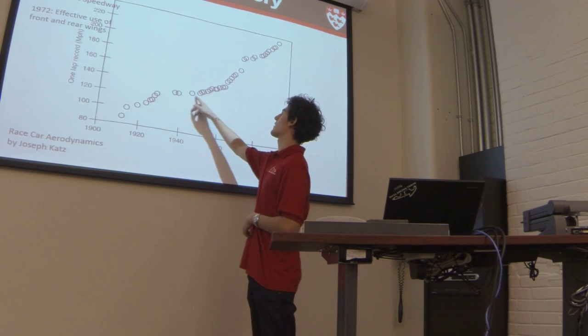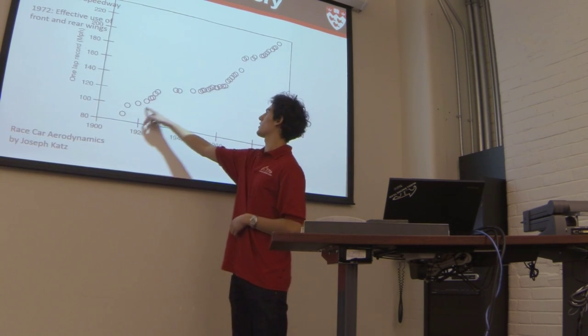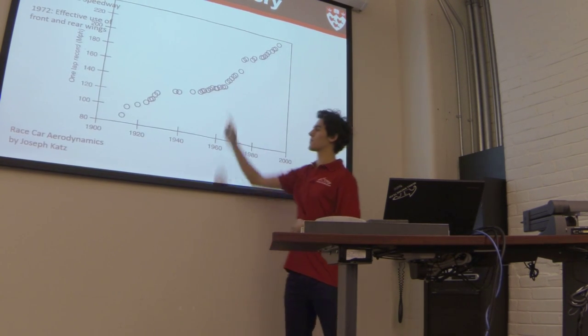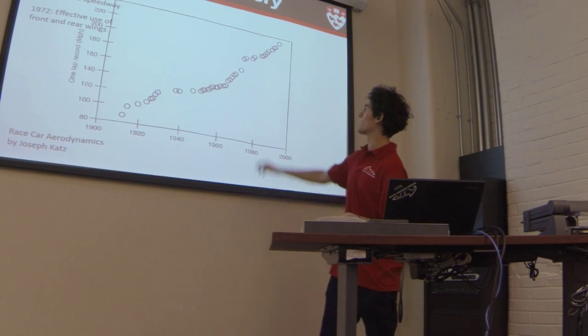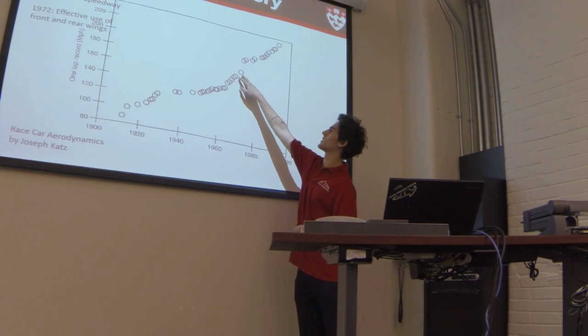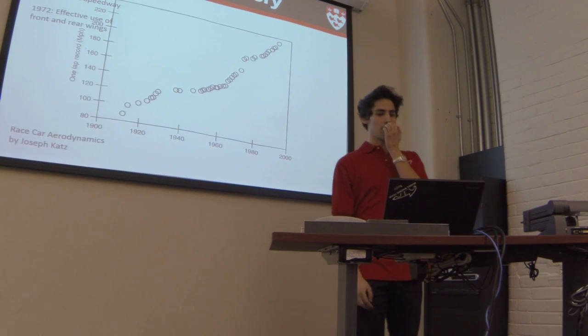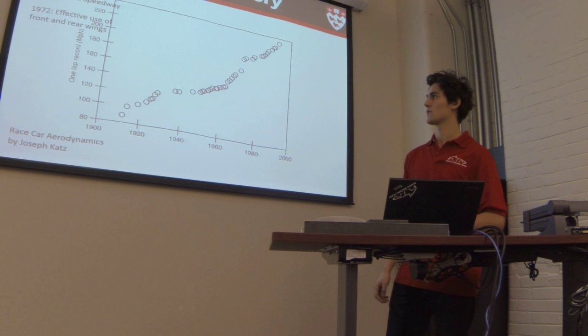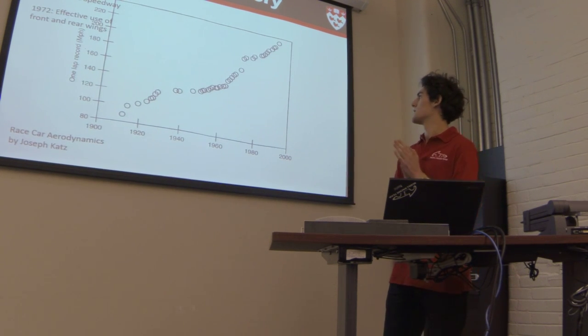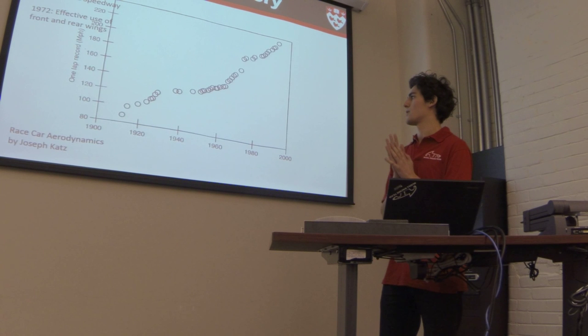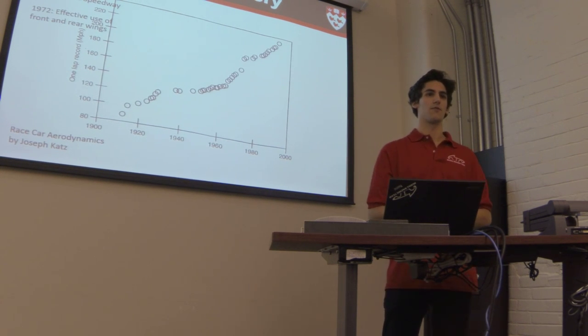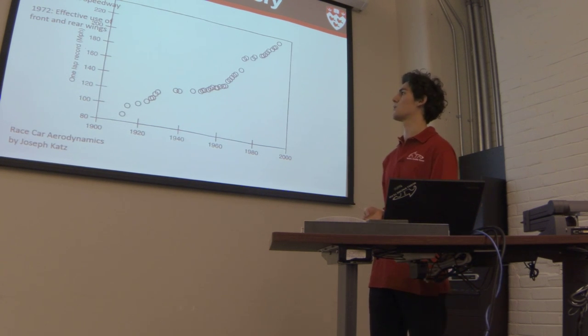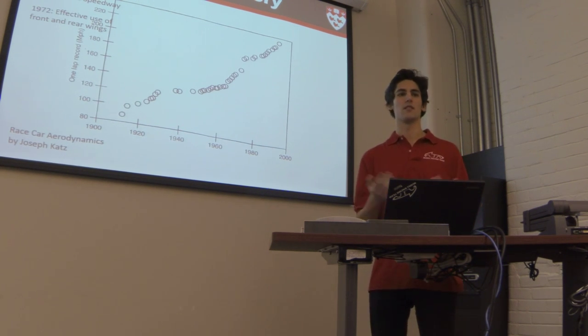And then you'll notice in the early 60s, the slope kind of jumps pretty dramatically. And you get a really big jump around 1970. And so what this is is actually when the race car designers were learning more about aerodynamics and how it affects the vehicle. So in 1972, where you see that big jump, it's the first time they were really able to make effective use of front and rear wings. And so the improvement in lap time is obvious from this point onwards. And that's why we see it in racing today.